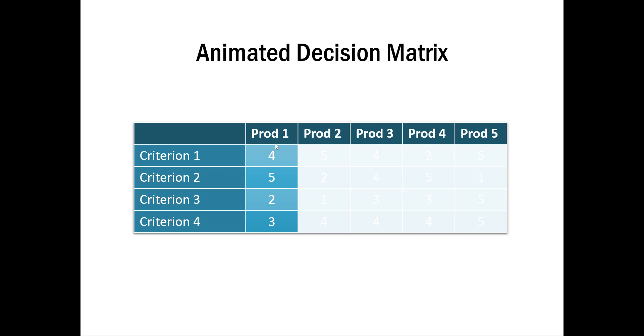Product one fares well on the first two criteria. And on the next click, you have the results for product two shown. Likewise, product three, product four and product five appear on click.